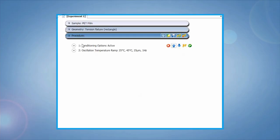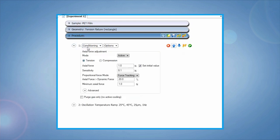Typical test procedures include axial force control in tension to prevent the sample from buckling during testing, followed by an oscillation step.